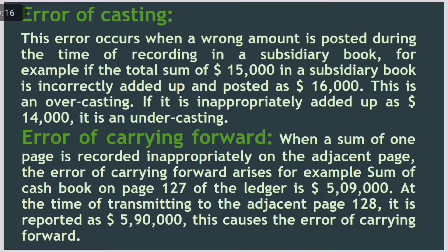Error of casting. This error occurs when a wrong amount is posted during the time of recording in a subsidiary book. For example, if the total sum of $15,000 in a subsidiary book is incorrectly added up and posted as $16,000, this is an overcasting. If it is inappropriately added up as $14,000, then it is an undercasting.